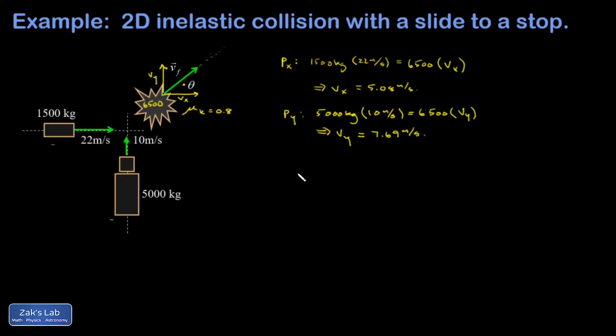So I'll draw it in the picture real quick. Here's vy at 7.69 meters per second. Now to get the final velocity, I need to draw a triangle. I have a vertical component of 7.69 meters per second and a horizontal component of 5.08 meters per second. I'm trying to find v final and theta.